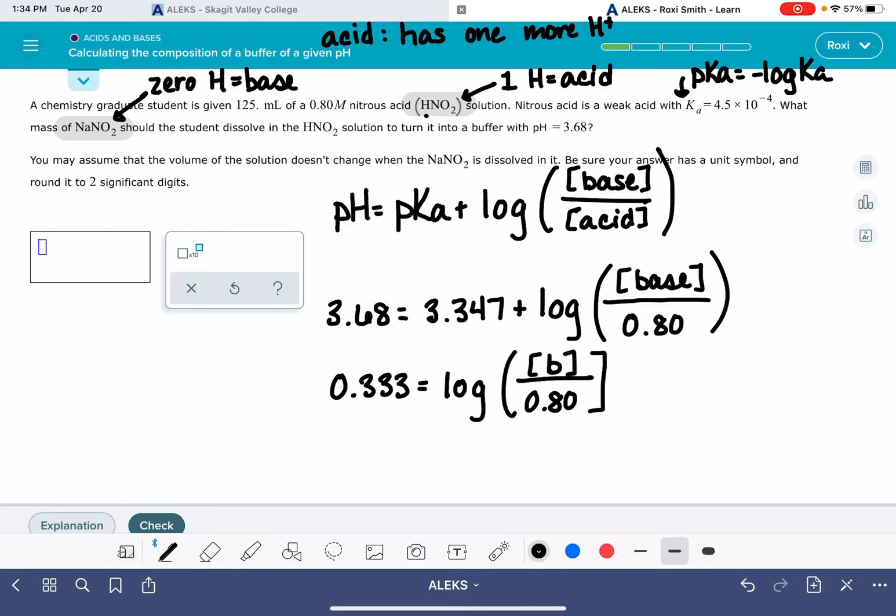We've got to get rid of that log term, which means we have to take the anti-log. So the left side, we're going to go 10 to the 0.333. That is equal to the concentration of the base over 0.80.